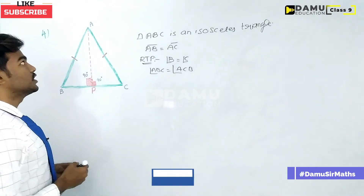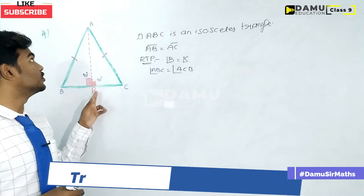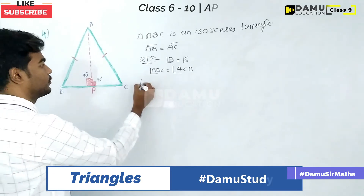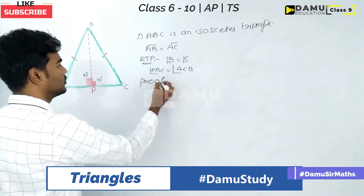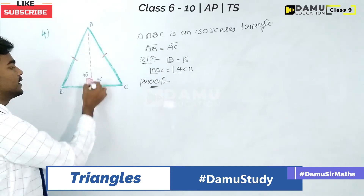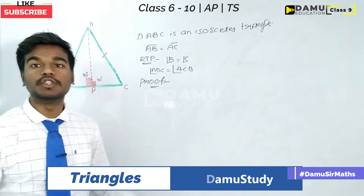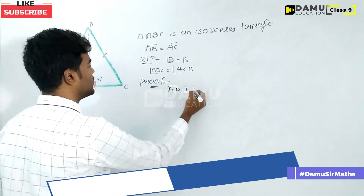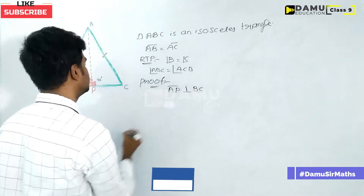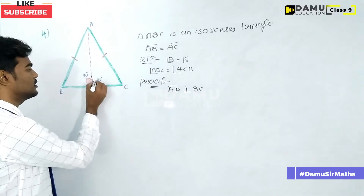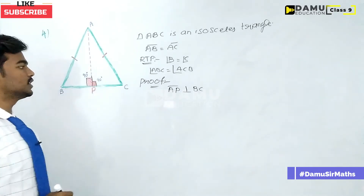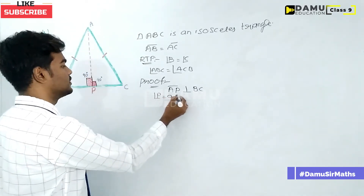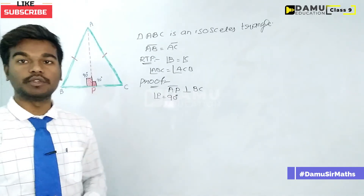For the proof, we draw one altitude — a perpendicular line from A to BC. So AP is perpendicular to BC, making 90 degrees. So angle APB will be equal to angle APC, both equal to 90 degrees — that is, a right angle.